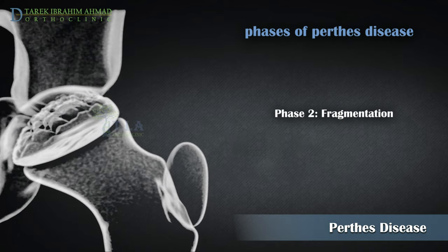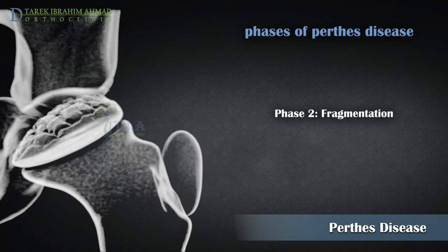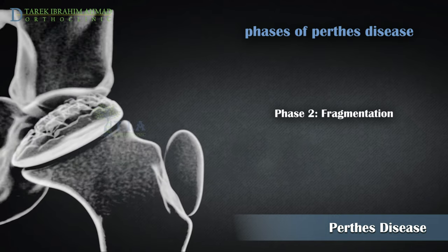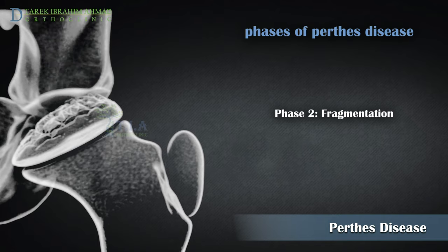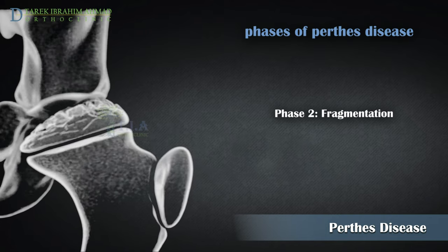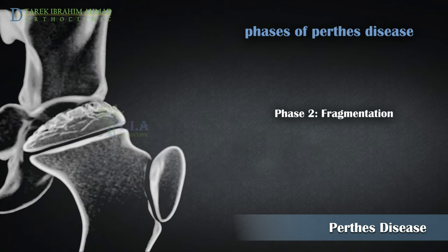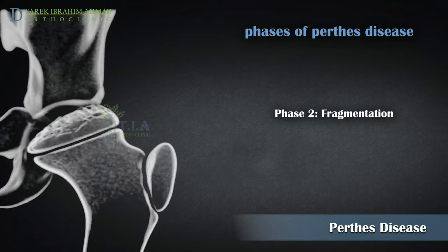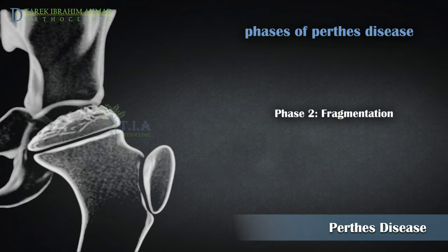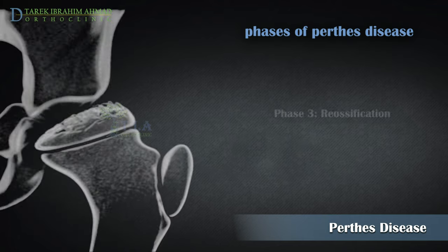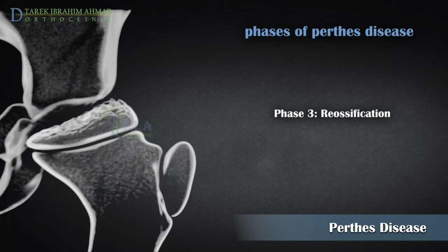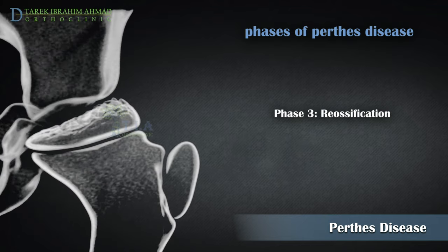Phase two: the fragmentation stage. Over a period of one to two years, the body removes the dead bone beneath the articular cartilage and quickly replaces it with an initial softer bone. It is during this phase that the bone is in a weaker state and the head of the femur is more likely to collapse into a flatter position.